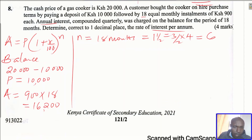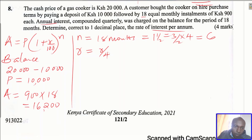Something we need to note is that for the rate, if we let R be the rate per annum, we are going to divide the rate by four, because the interest is paid on a quarterly basis. So we have to divide the rate by four, giving R divided by four over 100, which simplifies to R divided by 400. That is what we are going to use in this question. Now we have everything.